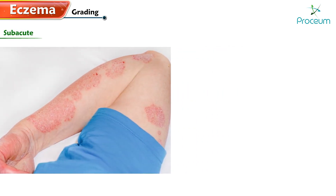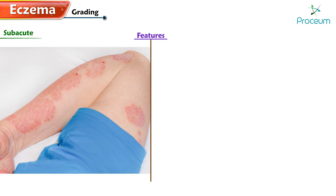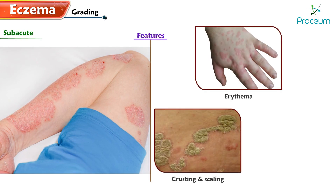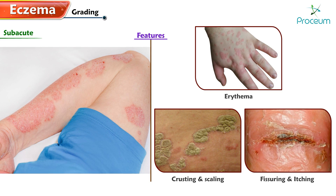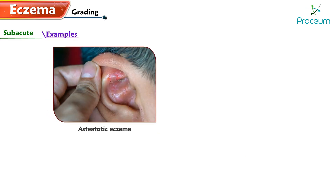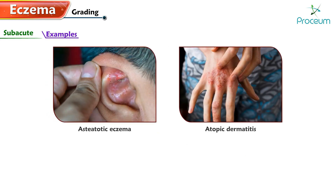Next is subacute eczema. Notable features include erythema, crusting and scaling, fissuring, and itching. Examples of subacute eczema conditions encompass osteototic eczema and atopic dermatitis. Histologically, a key shift is observed with decreased spongiosis and no vesicles.